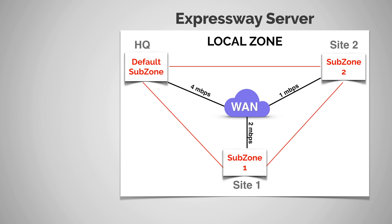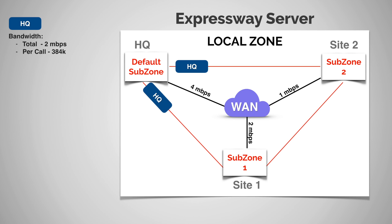I'm going to create a pipe called HQ, representing the headquarters office. The per call bandwidth will be 384k across the board. For the total bandwidth, I'm going to take this four megabits available on the physical connection — but remember, this is for everything going across the network, so I don't want to give the full amount to video calls. I'll take half of that and say two meg total bandwidth for the HQ pipe. Then I'll apply the HQ pipe to every link coming out of headquarters — in this case, subzone one and subzone two, and also the traversal subzone and default zone if they were included.